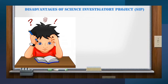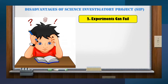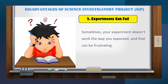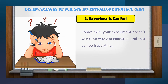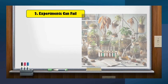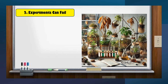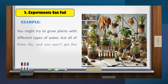Second, experiments can fail. Sometimes your experiment doesn't work the way you expected, which can be frustrating. For example, you might try to grow plants with different types of water, but if all of them die, you won't get the results you expected.